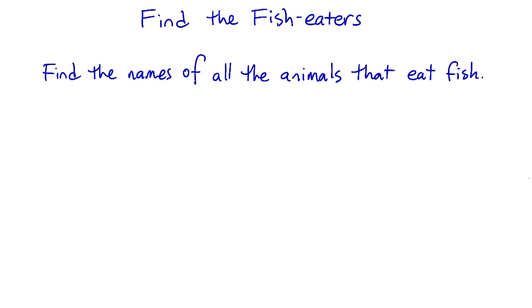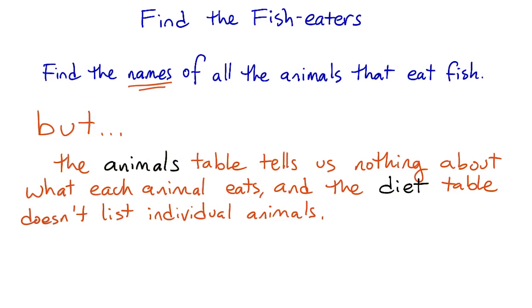See if we can put it together without looking back there. Trouble is, the animals table tells us nothing about what each individual animal eats. And the diet table doesn't list any individual animals. It only lists their species.